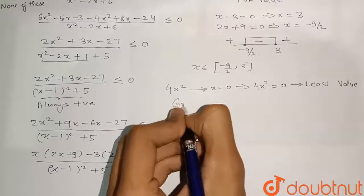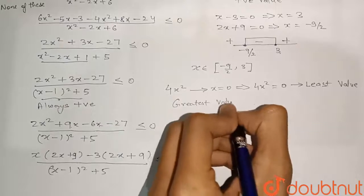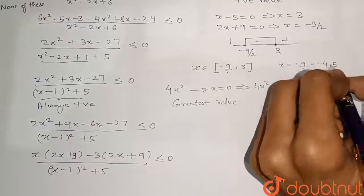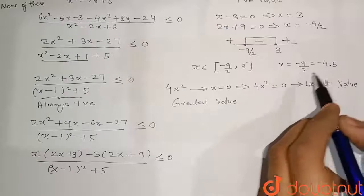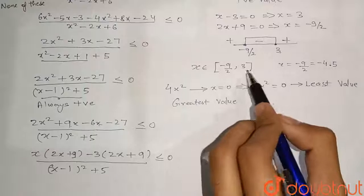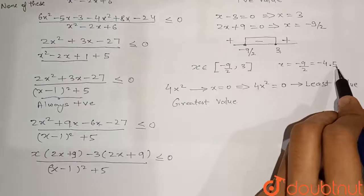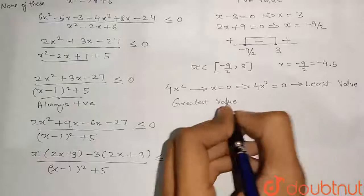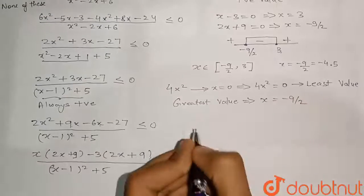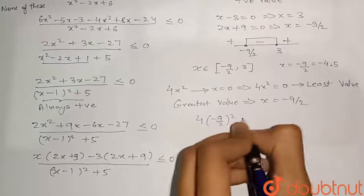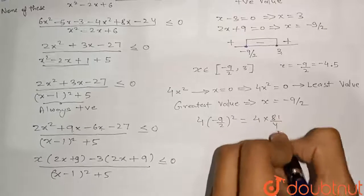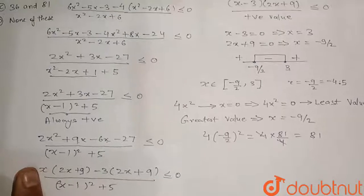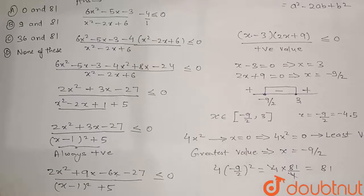For the maximum value: x = -9/2 = -4.5 is an endpoint. Since squaring removes the negative sign, (-4.5)² = (4.5)² = 20.25, which is greater than 3² = 9. So the maximum occurs at x = -9/2. The greatest value is 4 × (-9/2)² = 4 × (81/4) = 81. Therefore, the least value is 0 and the highest value is 81, making option A the correct answer.